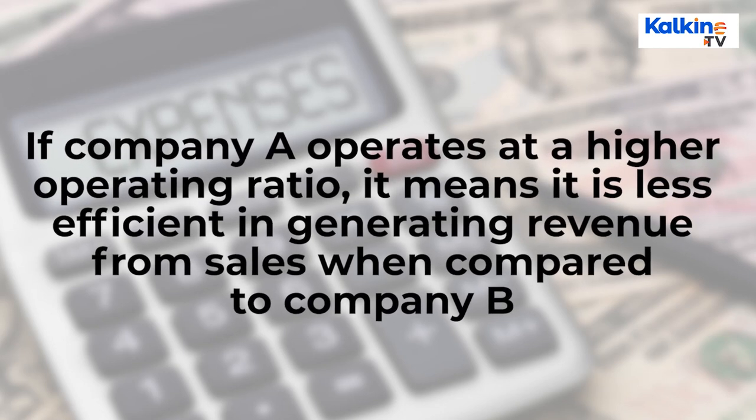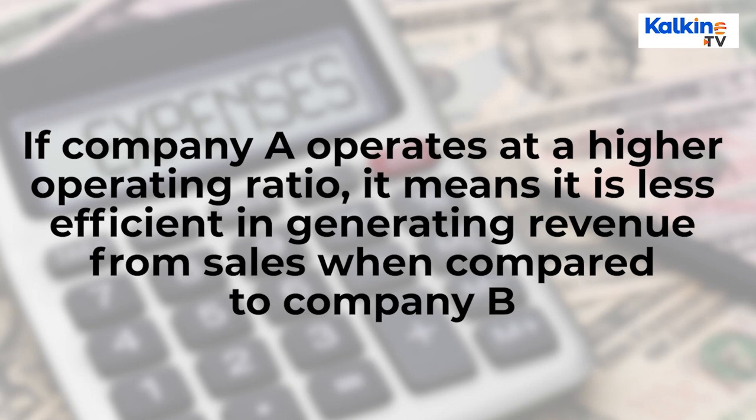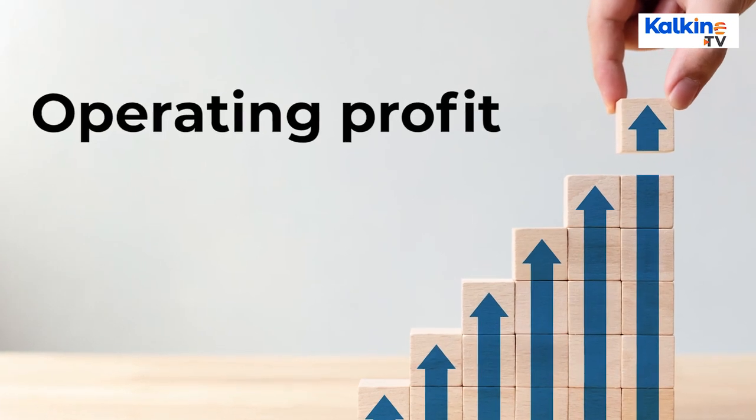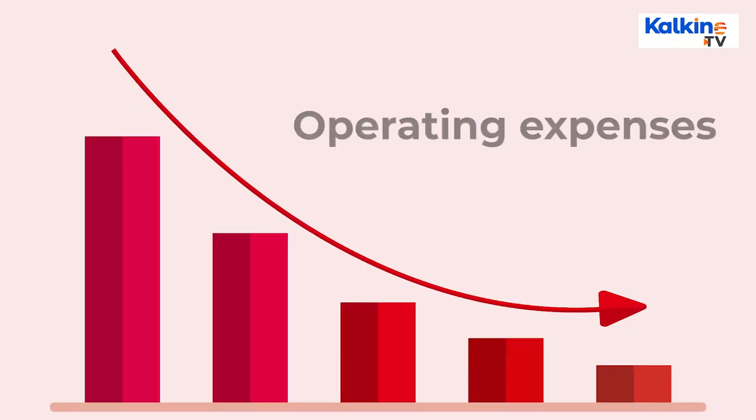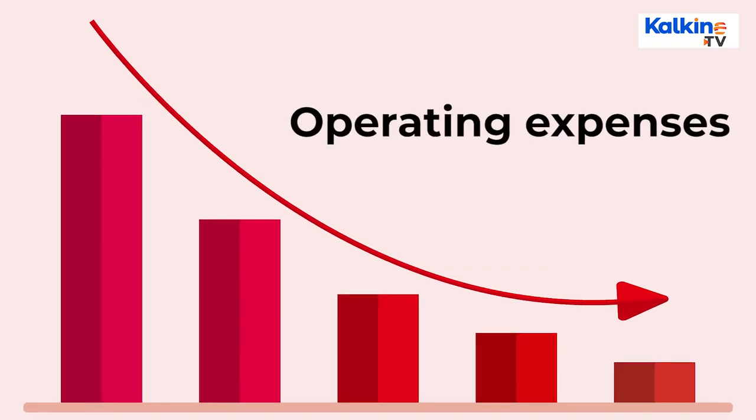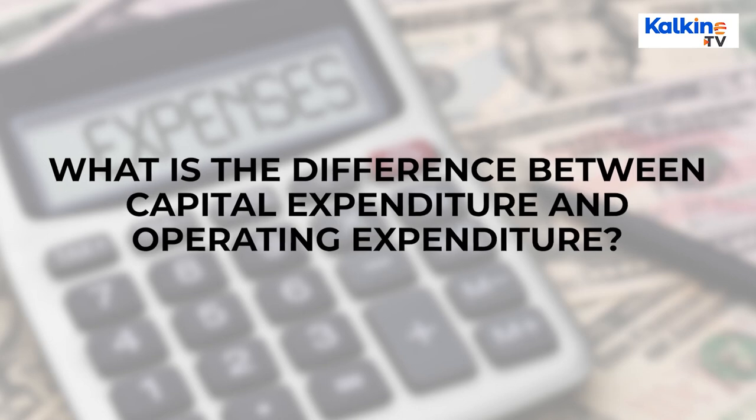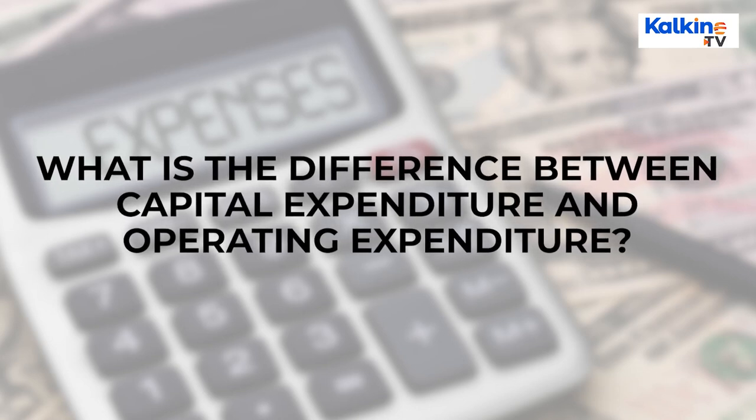For instance, if Company A operates at a higher operating ratio, it means it is less efficient in generating revenue from sales compared to Company B. The management's agenda is to increase the net income of the company, so management is always keen to look at OPEX numbers. To increase operating profit, the company focuses on expanding its sales and reducing operating expenses, giving it an edge over competitors.